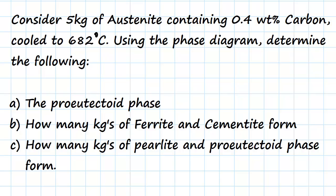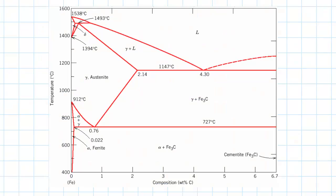and c) how many kilograms of perlite and pro-eutectoid phase form. Okay, so just to go over the data we have: five kilograms of austenite, the weight percent is 0.4, and it's cooled to 682 degrees Celsius. So using the phase diagram here,